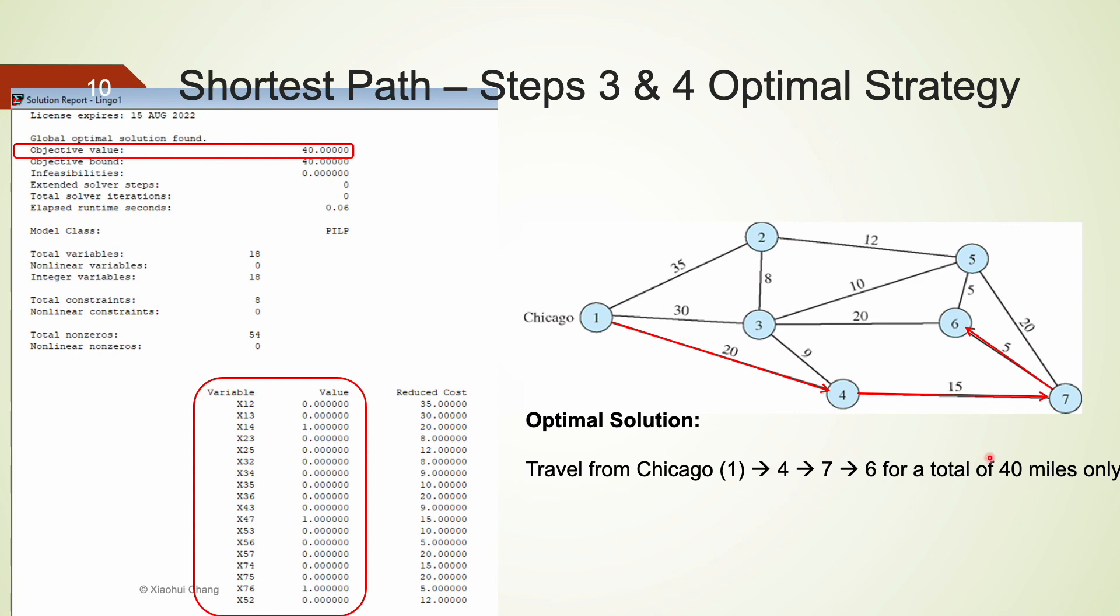Because this graph is not drawn to scale, it would be almost impossible to see this as the shortest path. I hope you found this example interesting. This also concludes this video. Thank you.